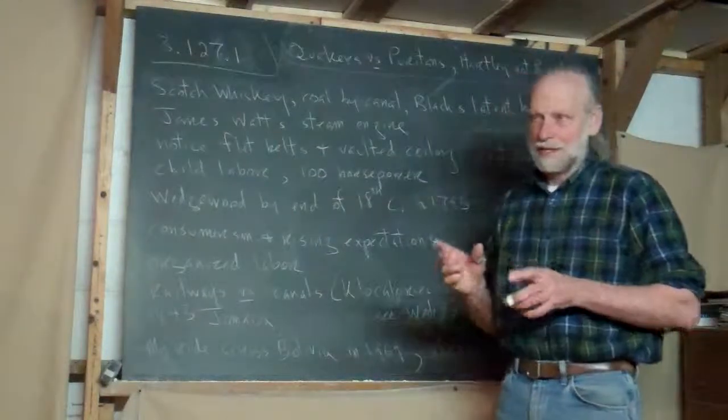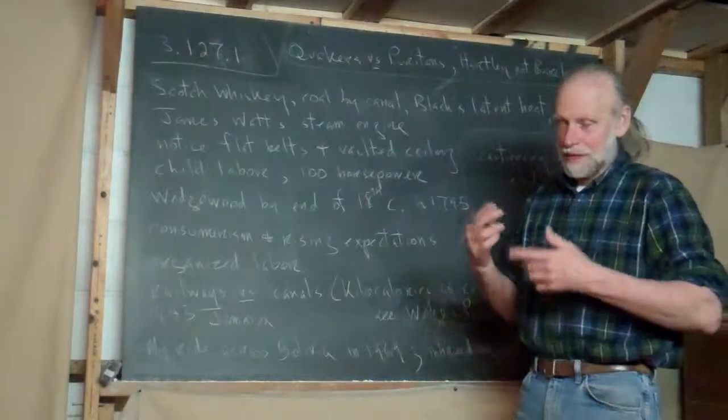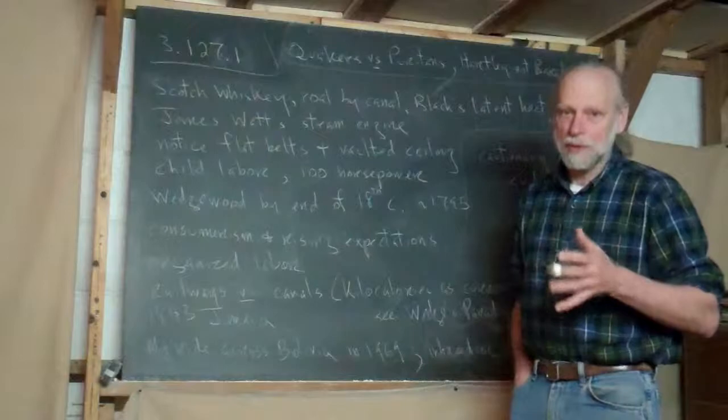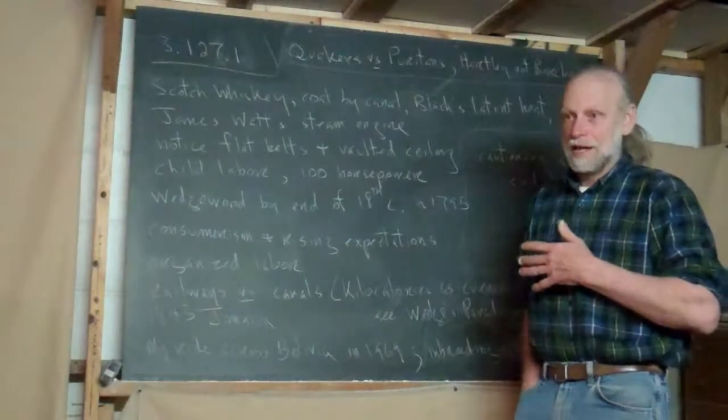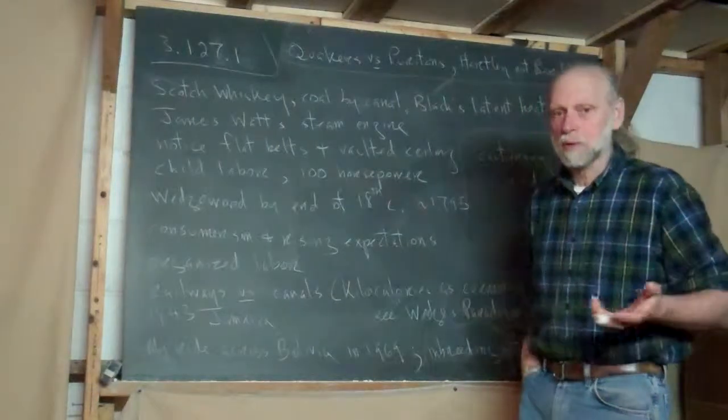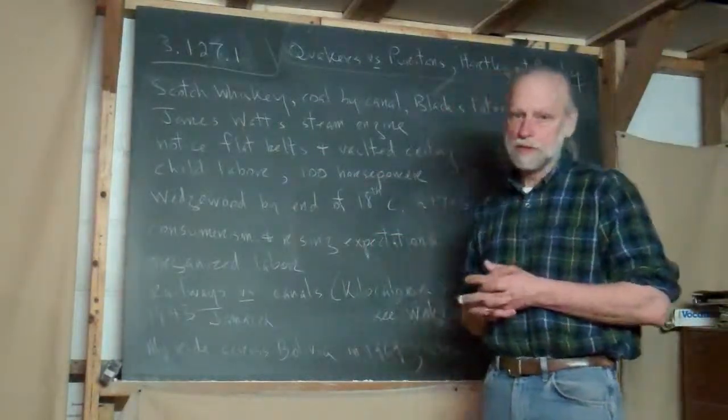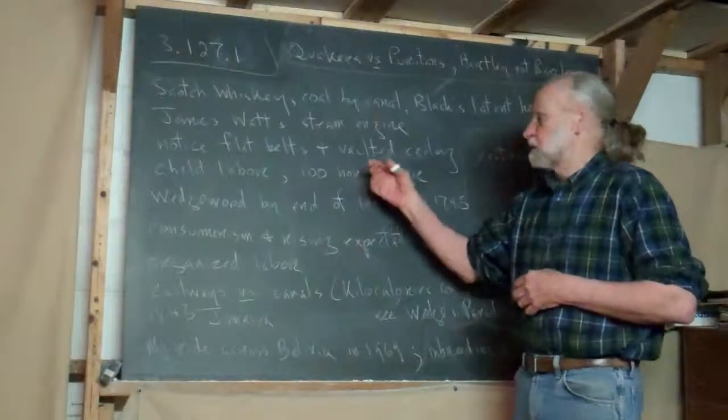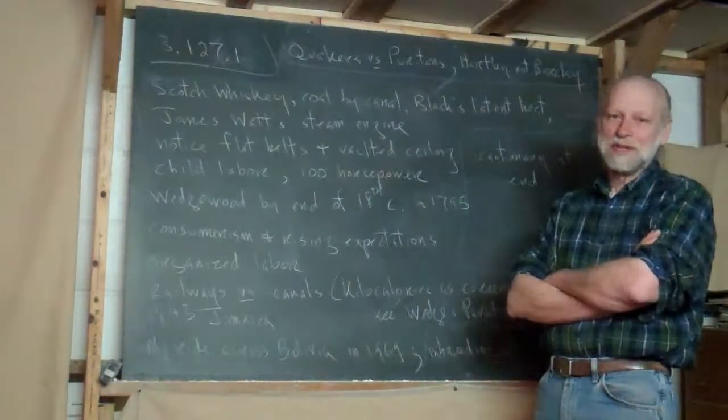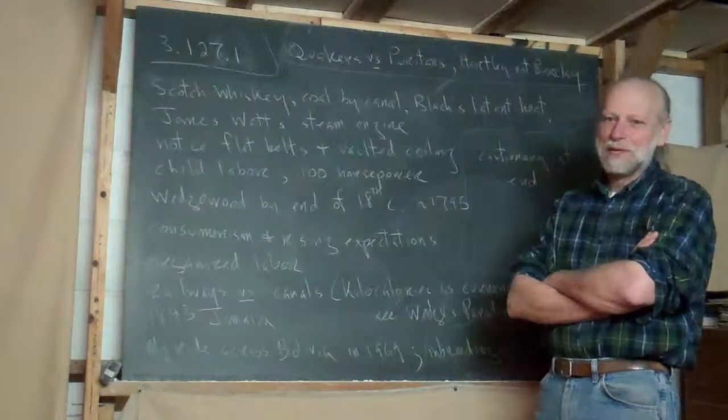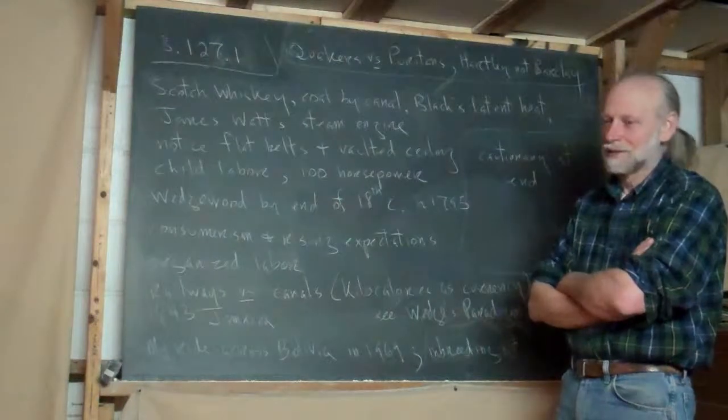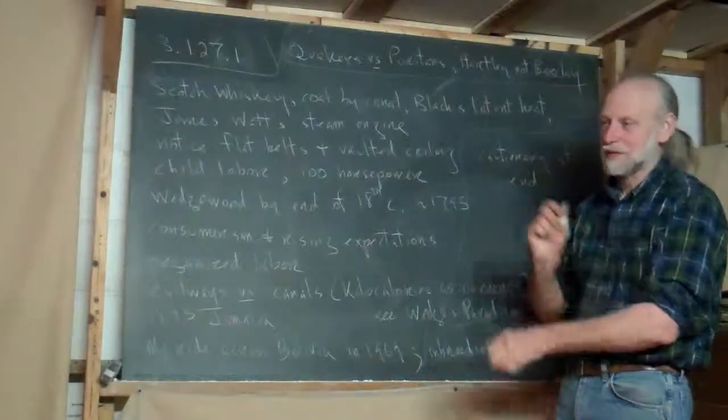Notice the flat belts that are driving the equipment. In the Old and Other Ways Museum, I intend to have many machines driven off a water wheel by flat belts. They were before V-belts, which is what people use now. And the vaulted ceiling, when he's in that empty factory, notice the ceiling. It's vaulted to the probably cast iron or structural steel girders.